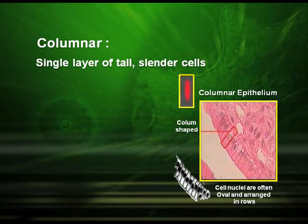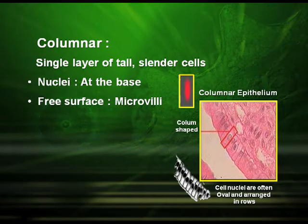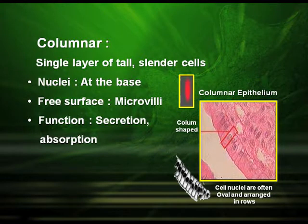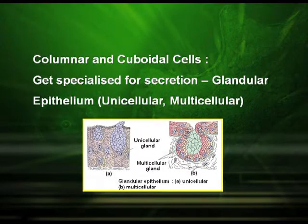Columnar epithelial tissue is made up of a single layer of slender cells. The nuclei are found at the base and the free surface has structures called microvilli. These are columnar shaped and their function is secretion and absorption. They are found in the lining of the stomach and intestine.